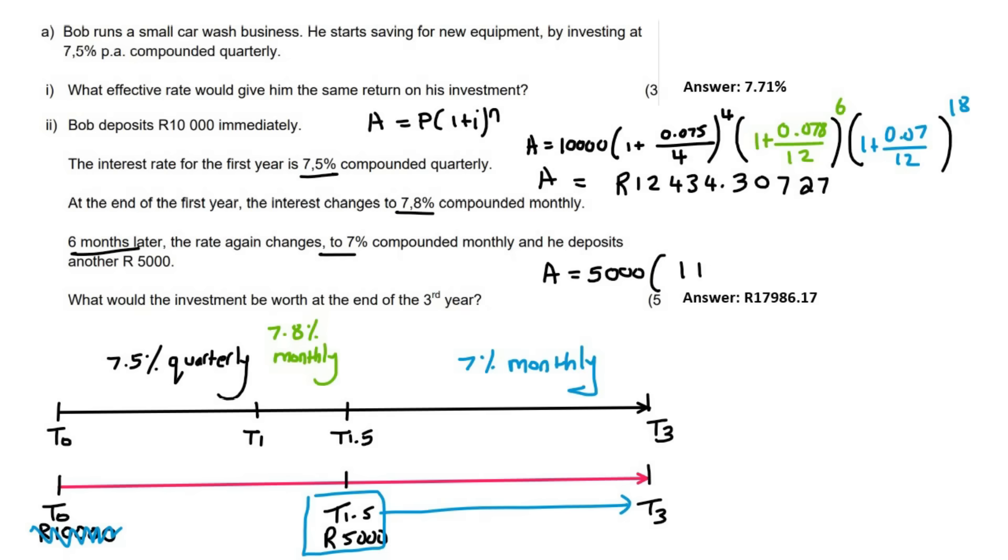And so we can use our normal formula. So it's going to be 5,000. Now, that one only experiences interest—let me do it in blue. It only experiences the 0.07 or you can say 7%. And that's also going to be for 18 months. And if you work this one out, don't round off. It's going to be—let me actually write the answer down here. It's going to be 5551.85912.